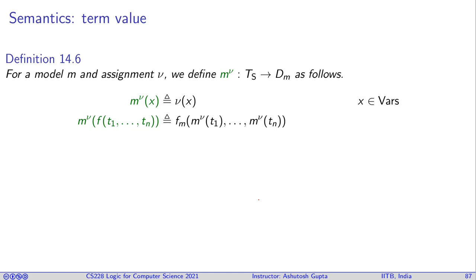Now we need to give meaning to terms. We define m^ν — the model m and assignment ν working together — to produce the interpretation for a given term. If the term is just a variable x, we return whatever value ν assigns to x.